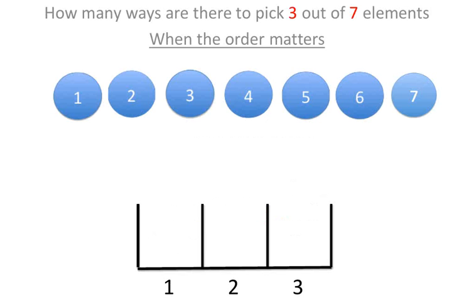So suppose we have these seven circles again, but this time we want to pick three out of these seven, three objects, and we want to put them in the three bins, and we care about the order in which they fall in the bin.